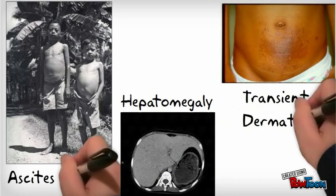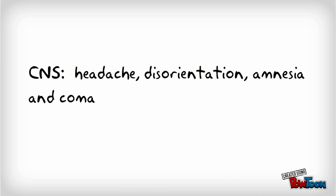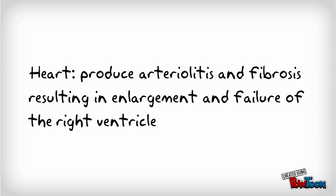CNS involvement can cause headaches, disorientation, amnesia, and coma. For the heart, Schistosoma can produce arteriolitis and fibrosis resulting in enlargement and failure of the right ventricle.